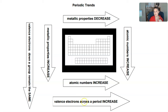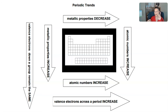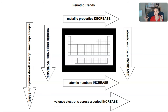The number of valence electrons increases as you go across a period: one valence electron in group one, two in group two, three in group three, and so on up to eight. Valence electrons are those outermost electrons — I like to call them 'velcro electrons' because they're the ones trying to bond with other atoms. Remember that every element in the same group (column) will have the same number of valence electrons. Metallic properties also increase as you go down a group.